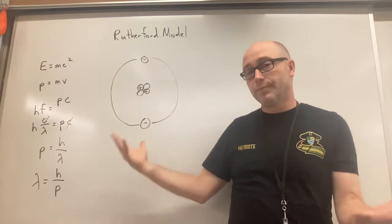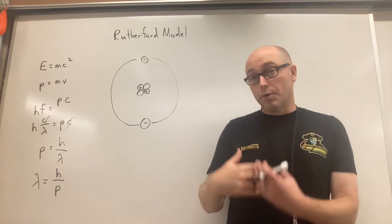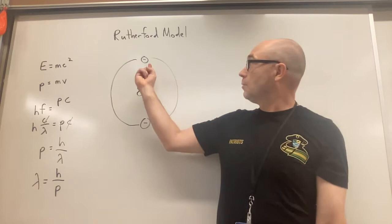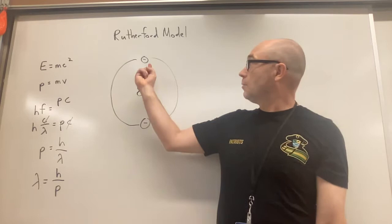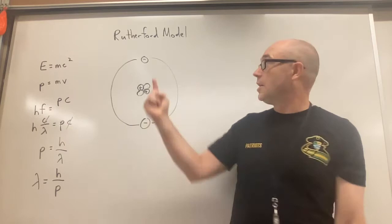Here's the problem with this - accelerating electrons produce electromagnetic radiation, we know that. Well, if these things are orbiting around, they are accelerating. Something moving in a circle is accelerating - speeding up, slowing down, changing direction to accelerate. So it's changing direction, so it's going to be accelerating.